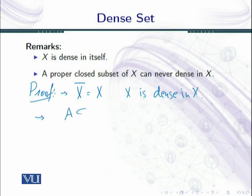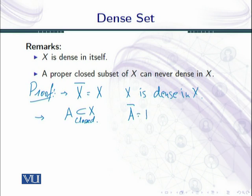For the second remark: a proper closed subset of X can never be dense in X. Let A be a proper subset of X with the condition that A is closed in X. We know that if a set is closed, then its closure is the same set. So the closure of A equals A. But since A is a proper subset of X, the closure of A cannot be equal to X. Therefore, A is not dense in X. Proved.